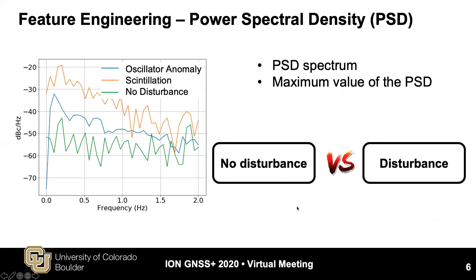The first feature we apply is the power spectral density, PSD. The left plot shows examples of PSD for oscillator anomaly in blue, scintillation in orange, and no disturbance in green. The no disturbance example shows lower power density across all frequencies, while oscillator anomaly and scintillation show higher power density at some frequencies. So we can use this to distinguish disturbed measurements from no disturbance. We use the entire PSD spectrum as well as the maximum value of PSD as features.